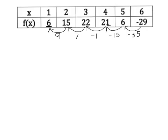Okay, well these differences are not all the same. We want them to be the same, so we are going to subtract again. 7 minus 9 is negative 2. Negative 1 minus 7 is negative 8. Negative 15 minus negative 1 is negative 14. Negative 35 minus negative 15 is negative 20.